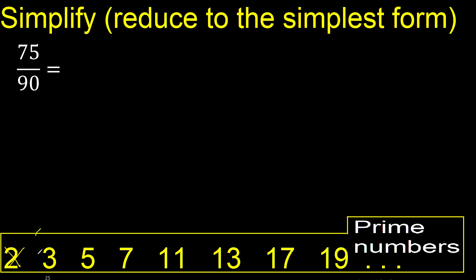Can be divided by 3 because 7 plus 5 is 12, and 12 can be divided by 3. 75 divided by 3 is 25. 90 divided by 3 is 30.